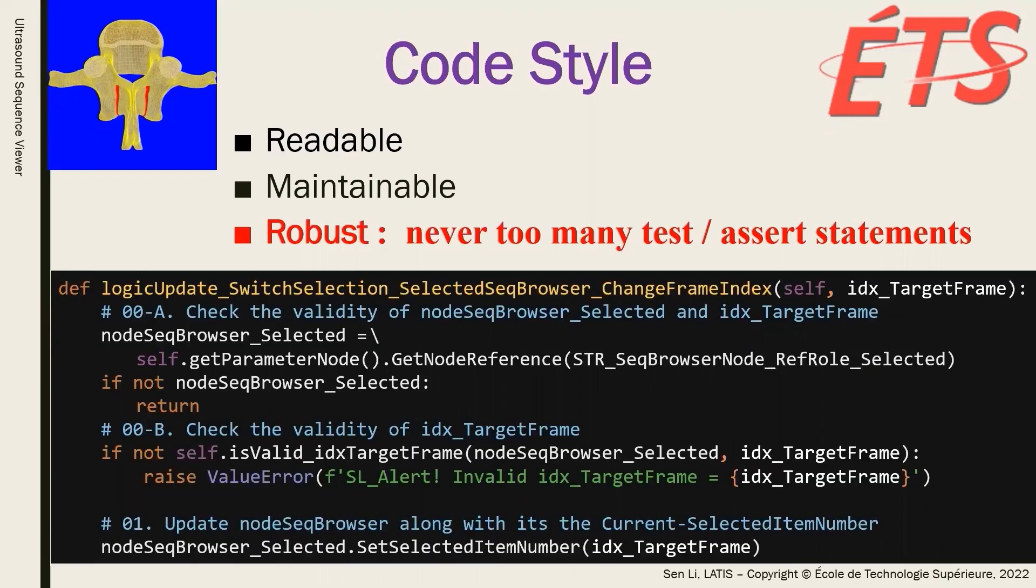This is a back-end update function. It is called when the current active sequence browser needs to change the selected item number. In our application, we can not only switch between different sequence browsers, but also switch between different 2D images, both within a sequence browser and across different sequence browsers.